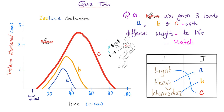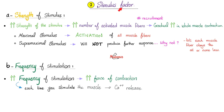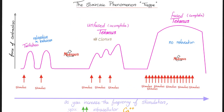When lifting three different weights — light, heavy, intermediate — you see distinct contraction graphs. Factor two is the stimulus: increasing stimulus strength recruits more motor units and more activated muscle fibers. Increasing frequency also increases force. The hero of contraction is ionized calcium. The staircase phenomenon: stimulus-response, stimulus-response — these individual responses are called twitches.